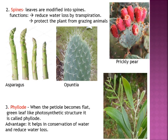In phyllode, the petiole becomes a flat, green, leaf-like, photosynthetic structure. The actual leaves are very much reduced or lost, and the main leaf-like structure is the petiole. In the diagram you can see that the flat leaf-like structures are actually the petioles, and the small reduced structures are the leaflets, so that water loss can be prevented. This is called a phyllode.